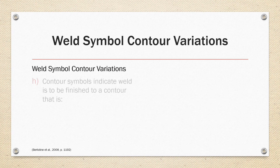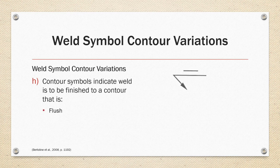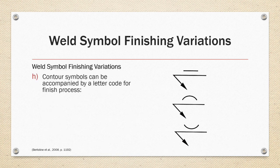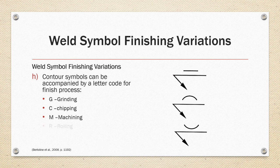Weld symbol contour variations: contour symbols indicate the weld is to be finished to a contour that is either flush, convex, or concave, as shown by the symbols on the right. The contour symbols can be accompanied by a letter code to define a finishing process: G for grinding, C for chipping, M for machining, R for rolling, and H for hammering. If the process is not defined, it's left up to the interpretation of the welder on how to produce the finish required.